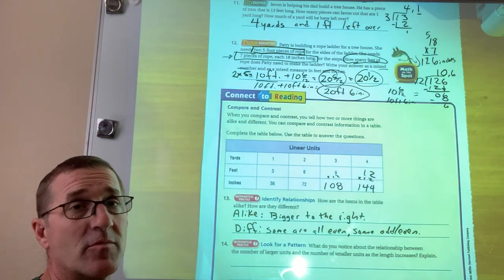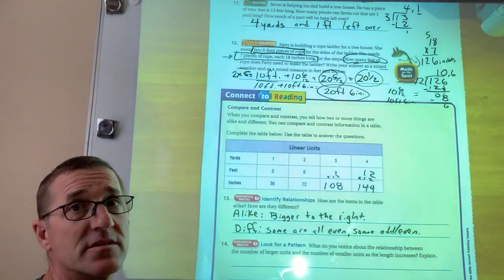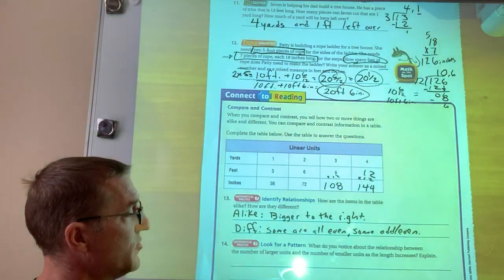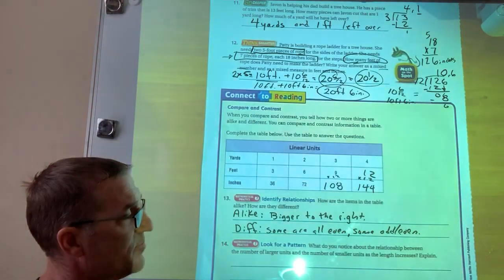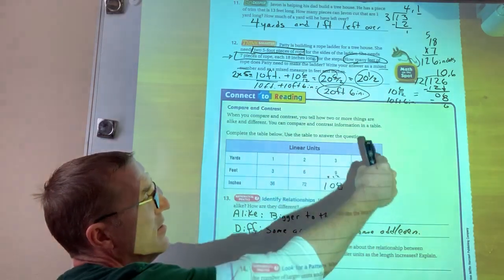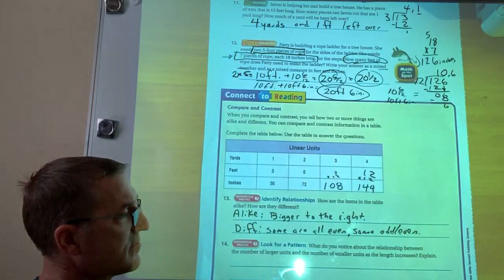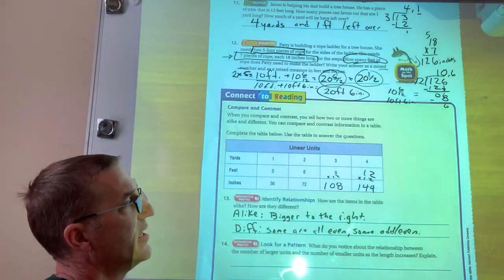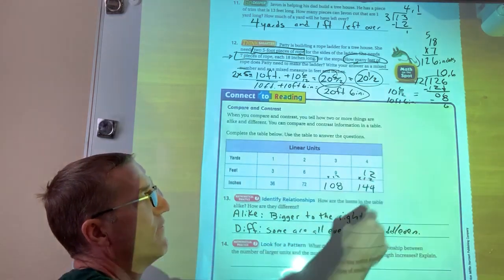I'd like to hear some of the things that you guys came up with. There's lots of stuff that you could do with this. So don't overthink it. And then look for a pattern. What do you notice about the relationship between the number of larger units and the number of smaller units as the length increases? What do you notice about these, the relationship between these numbers? Like here I've got one, three and 36 and here I've got four, 12 and 144.